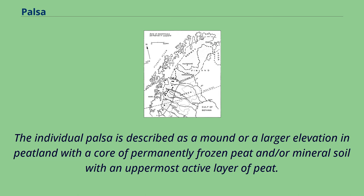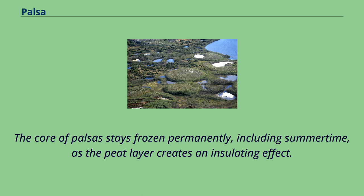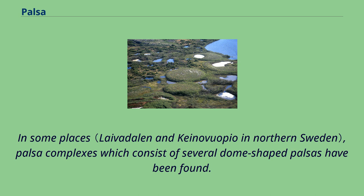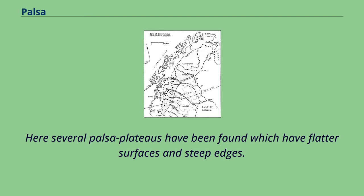The individual palsa is described as a mound or a larger elevation in peatland with a core of permanently frozen peat and/or mineral soil with an uppermost active layer of peat. The landform occurs in areas with discontinuous permafrost. The core of palsas stays frozen permanently, including summertime, as the peat layer creates an insulating effect. Mostly palsas have an oval or elongated form, but different shapes of palsas have been described. In some places, palsa complexes which consist of several dome-shaped palsas have been found. At other places, palsa plateaus have been found which have flatter surfaces and steep edges.